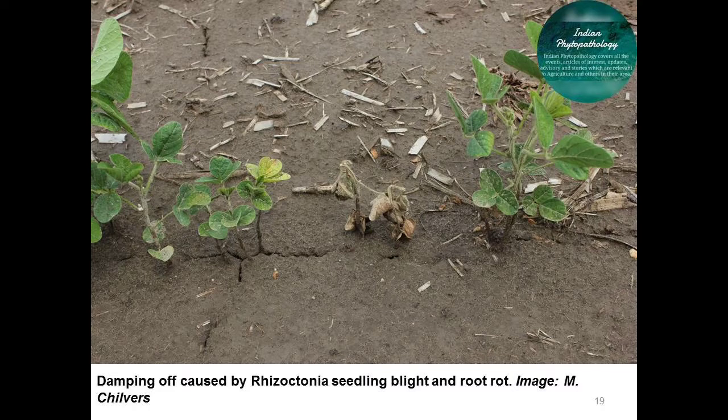Cool wet springs followed by hot dry conditions are favorable for development of this disease. This disease is more severe on light and sandy soil and can be more common on the slopes of the field. Many strains of Rhizoctonia can also infect corn, alfalfa, dry beans, and some cereal crops.